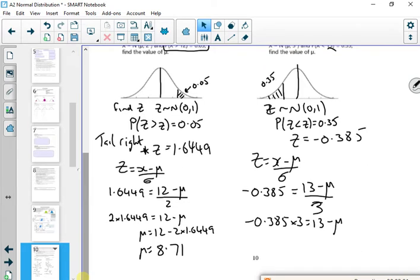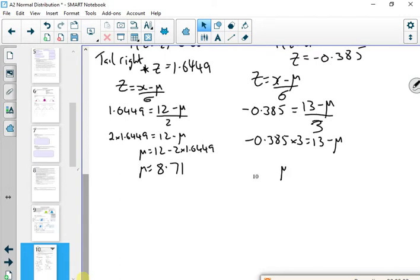So if I rearrange that, then mu is 13 plus 3 lots of 0.385. The completed pack used 0.39 and they got 14.17. So it would be around the 14.17 issue. But I've given up. It's killed me. It's killed my will to live with the thing going all wrong.